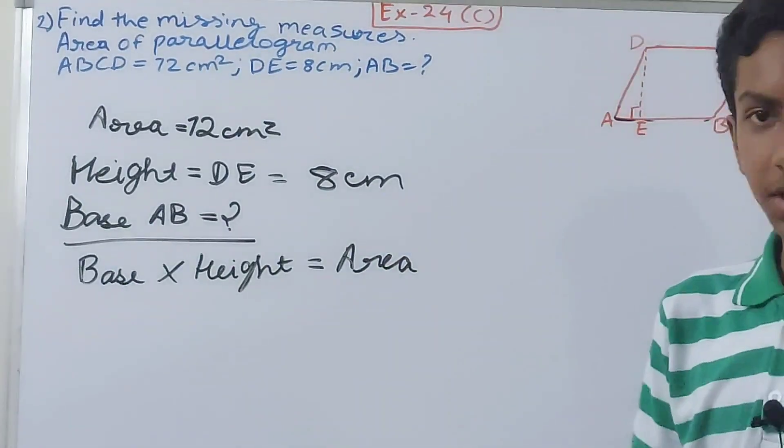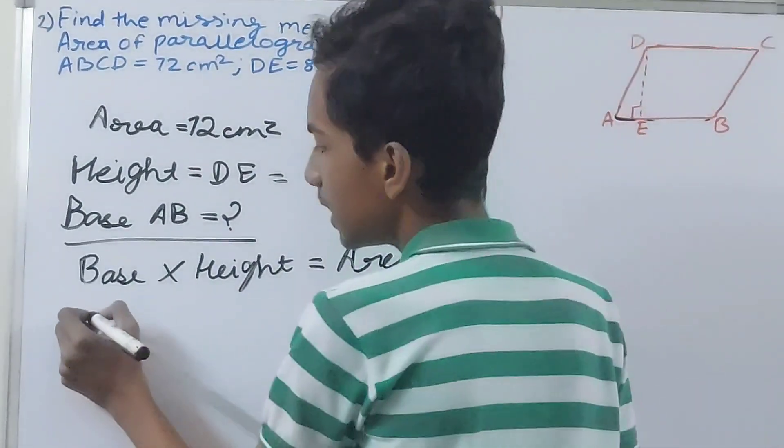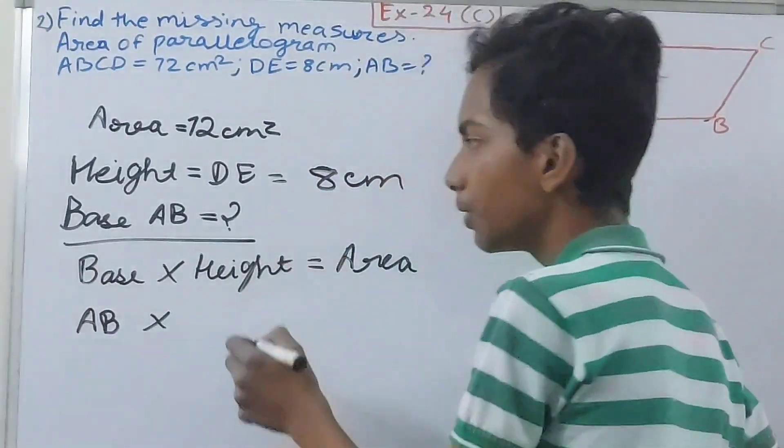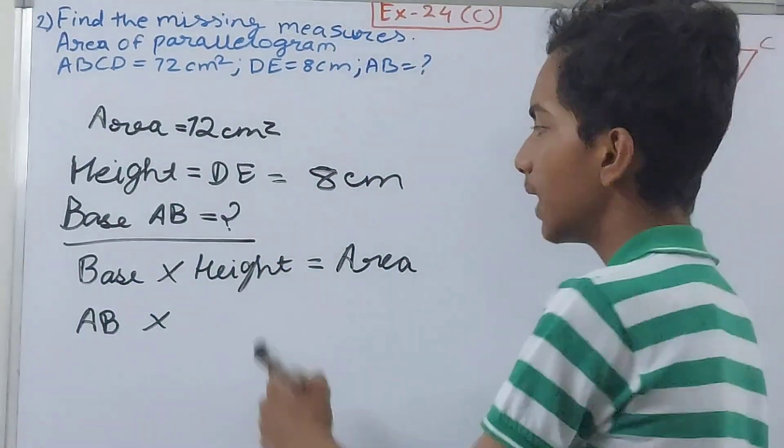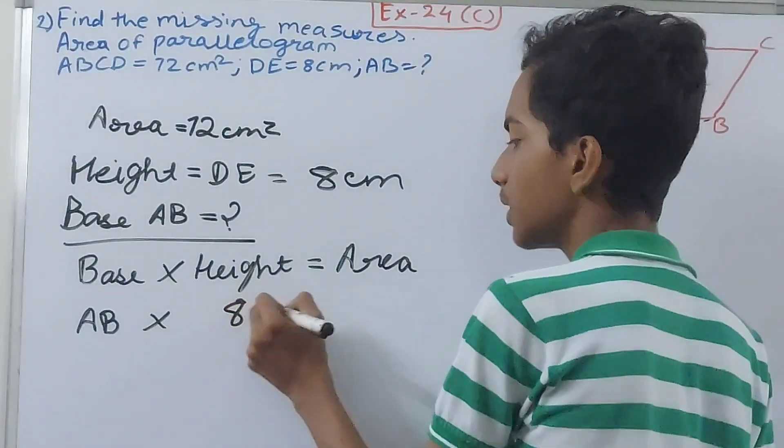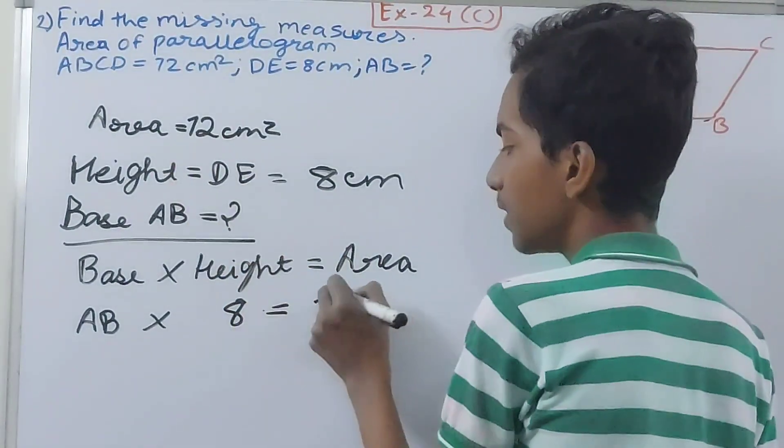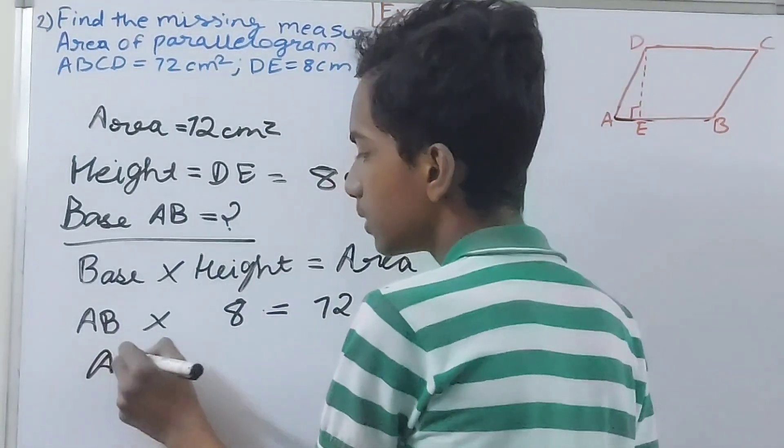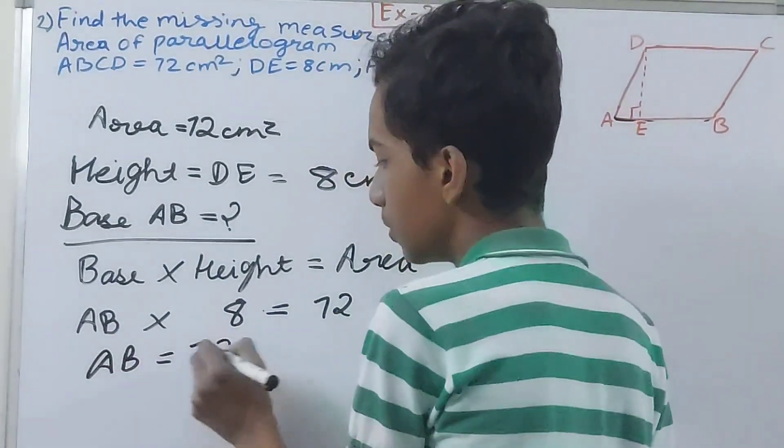So very simple. Now put the values. Base we don't know, let's keep it AB for now because we do know that base is AB but we don't know the length of AB. Then height is 8 centimeters equals to area is 72.